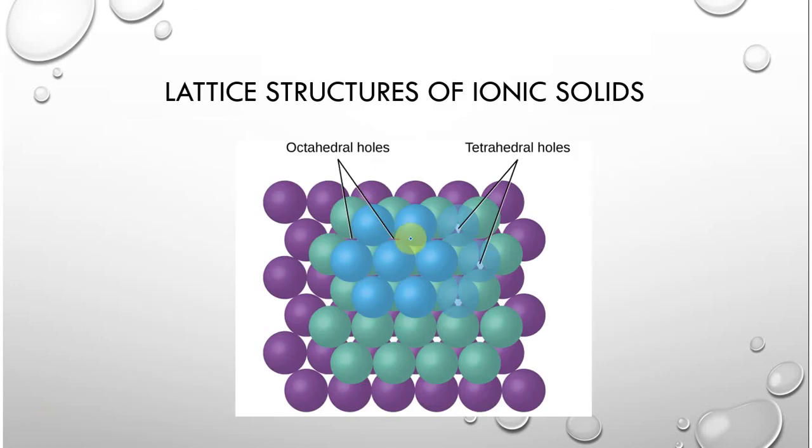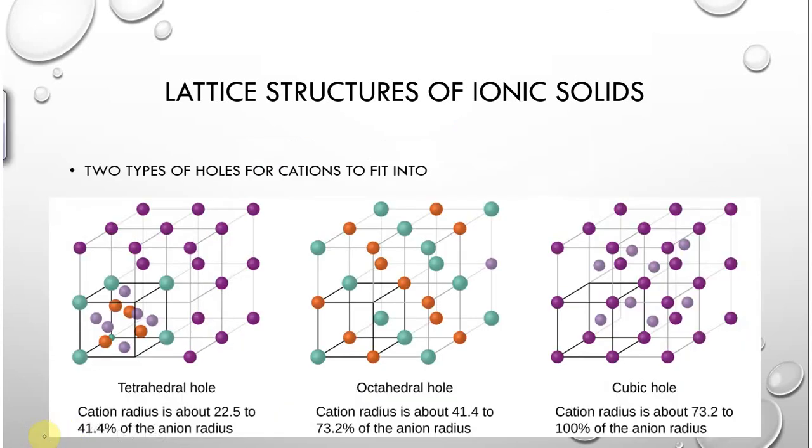Now it also talks about octahedral versus tetrahedral holes in ionic compounds or ionic solids. And here it's because you're either going to be touching four or you're going to be touching six. Four or six atoms or ions. And so you can kind of account for different ions by looking for where you can put your positives and your negatives to make sure that it is detailed enough.